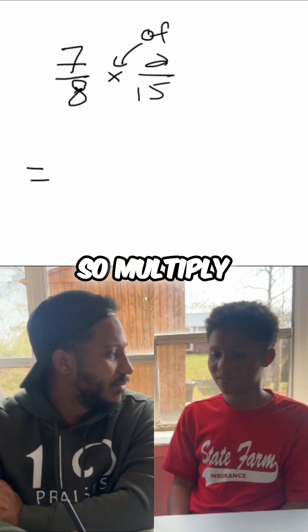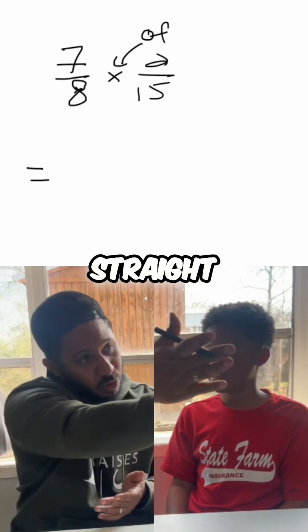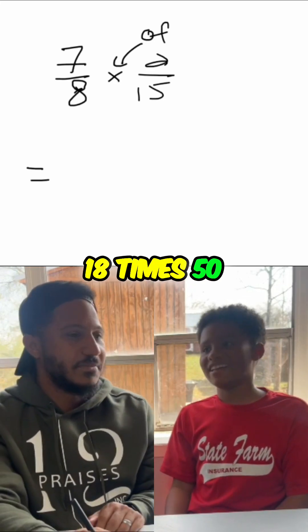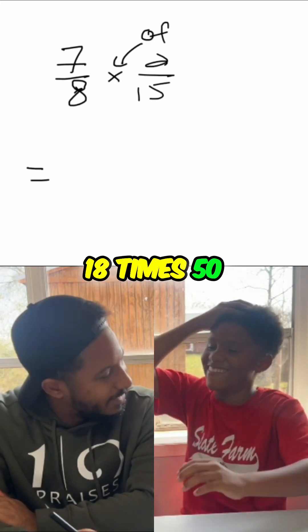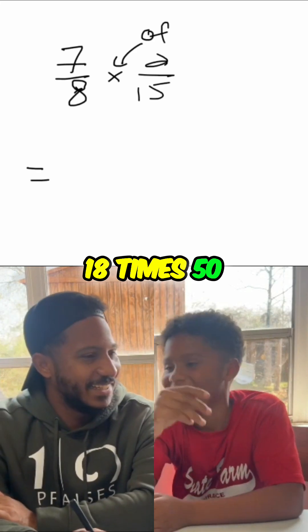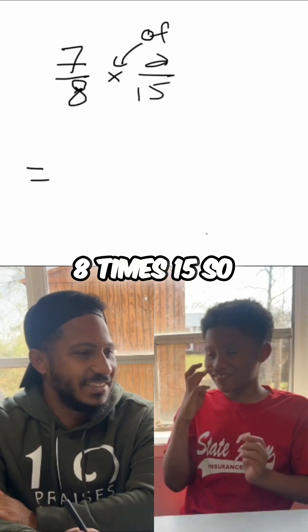Yep. So we multiply, multiply straight ahead. Eighteen times fifteen. Eighteen? See, see, see, you got me. Okay, so eight times fifteen. So, eight times ten is eighty.